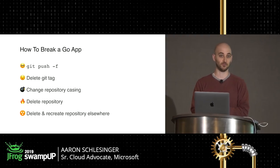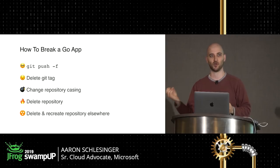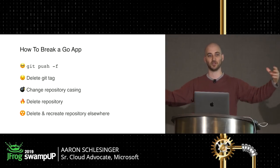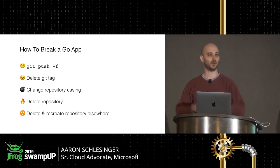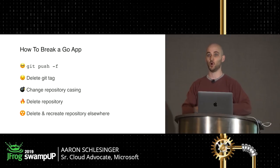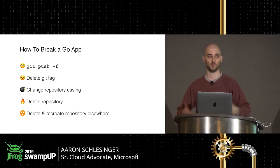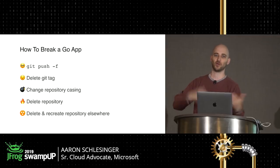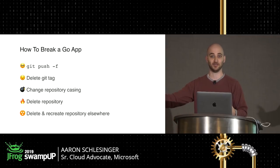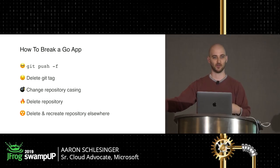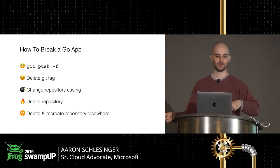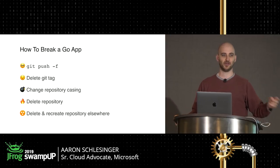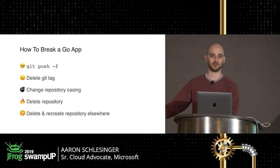But we also have a problem that's always existed and is cropping up more as the Go ecosystem grows. Git, GitHub, Bitbucket, GitLab, and almost all hosted VCS tools are really well designed to mutate code — that's the whole point. You have commits, you can overwrite commits, do tags, and on GitHub and GitLab you can rename or delete repositories, or even change the owner of a repository. These are ways that a library author can break everybody who relies on their library.